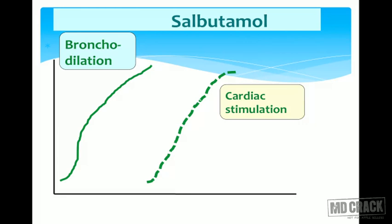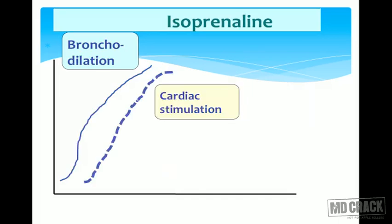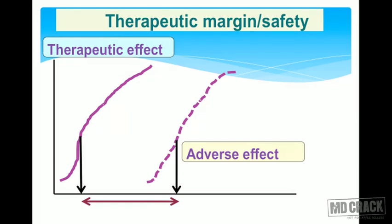For example, salbutamol (selective beta-2 stimulant): the dose-response curve for bronchodilation and that for cardiac stimulation are far apart, meaning you can give salbutamol for bronchodilation with minimal cardiac stimulation. In contrast, isoprenaline's curves for bronchodilation and cardiac stimulation are close together — the effects overlap. So isoprenaline is less selective and salbutamol is more selective.